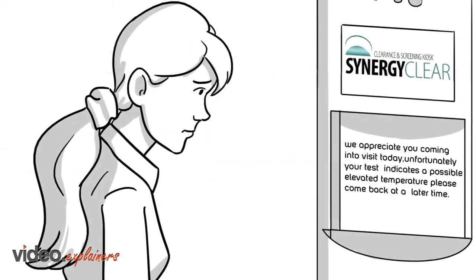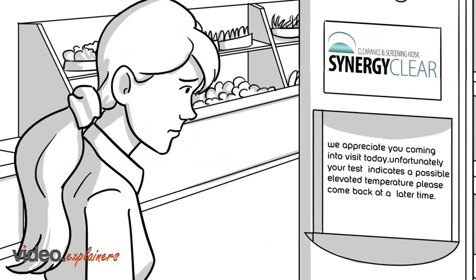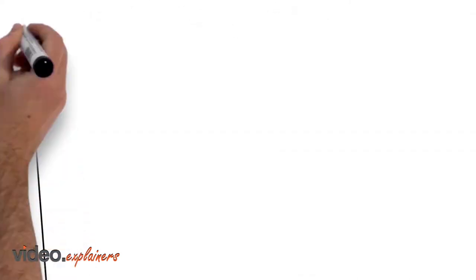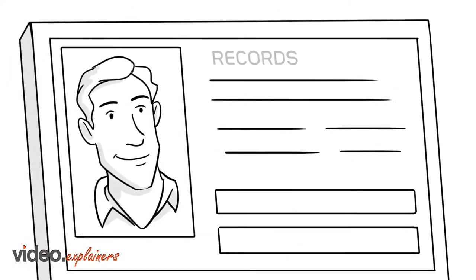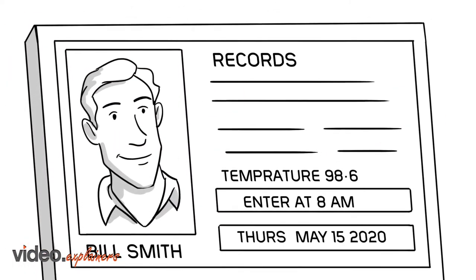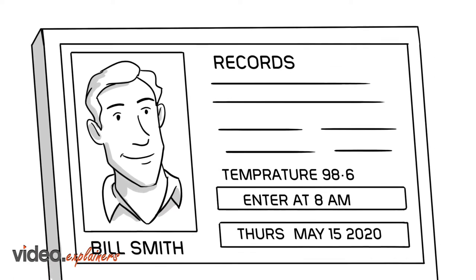In retail settings, Synergy Clear can politely inform people of their temperature and provide guidance. For employees, a scan of body temperature is performed. If it shows the normal range of 98.6, then an office or store is opened.